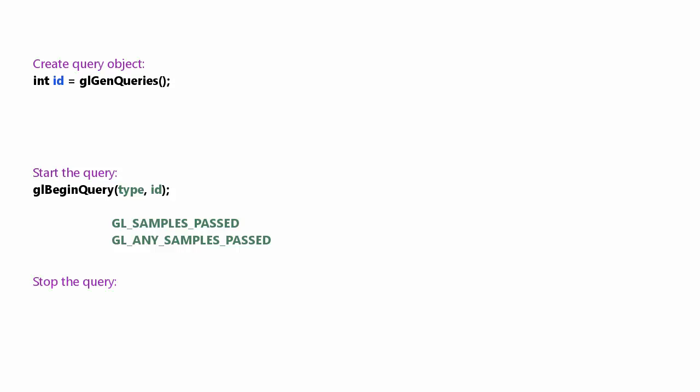When using GL_ANY_SAMPLES_PASSED, OpenGL simply determines if any pixel passed the depth test — the result is true if one or more pixels passed, and false if none passed. This is something you could use if you wanted to implement occlusion culling. To stop the query, once we've finished rendering the thing we were querying, we call glEndQuery, which again takes in the type of query that was being used.